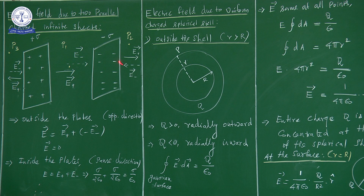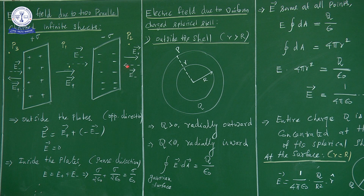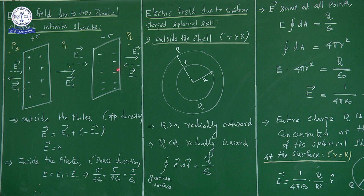Next, we consider a point outside: the P2 point. In the P2 point, the field is in the outward direction, so the vector is in the outward direction. In the P2 point, the electric field is in the inverse direction. The direction is the E minus vector, directed toward the negative charge infinite sheet.